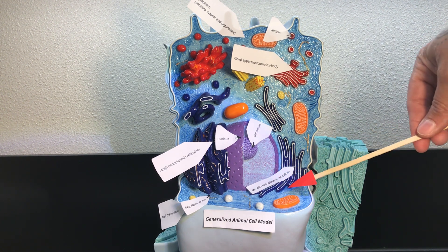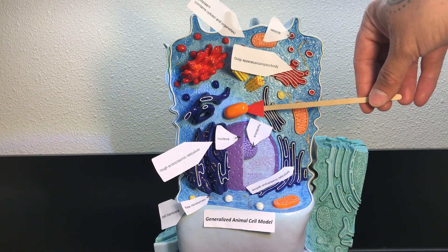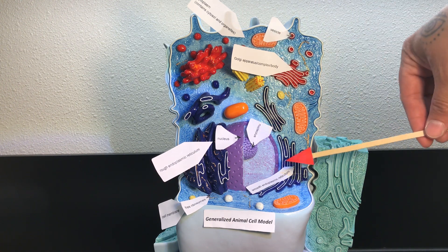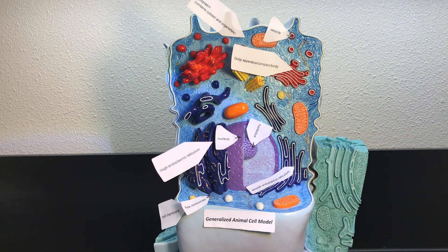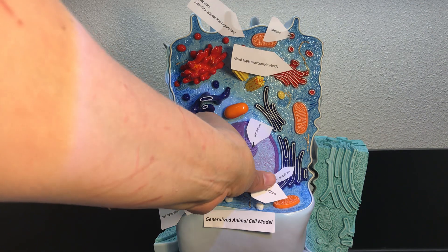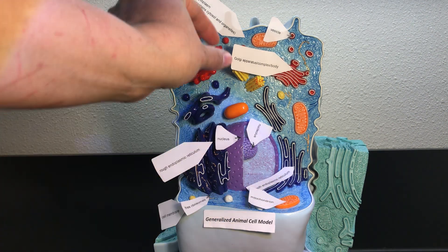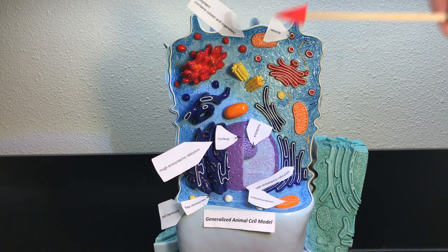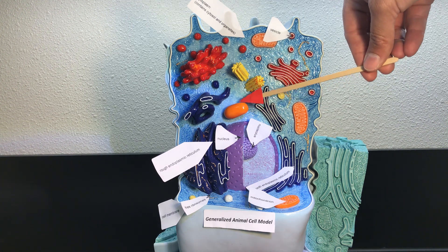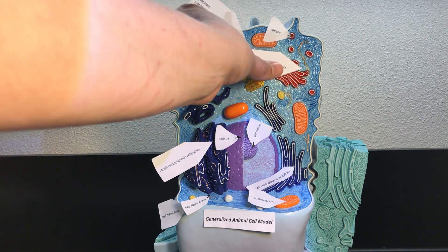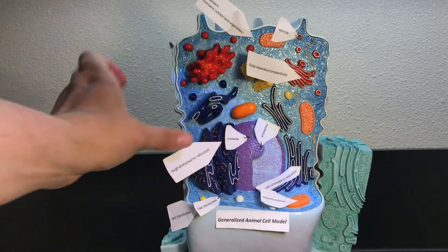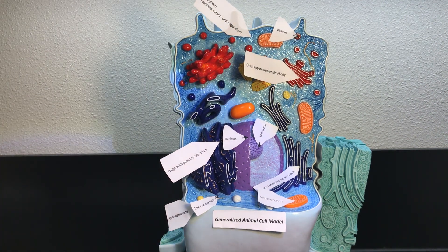You might have been wondering what these orange jelly bean-looking things are — these are the mitochondria. Each mitochondrion makes ATP during cellular respiration. Remember there are more of these, some hiding behind here. That's mitochondrion, or a group of them, mitochondria.